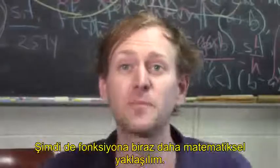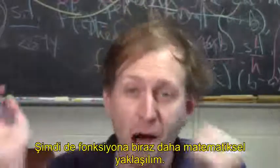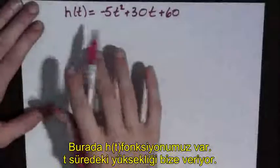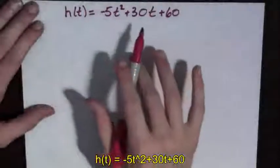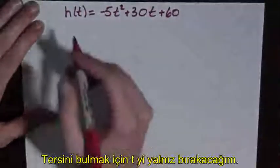Now let's just get a little bit more rigorous and do it algebraically. So here we have our function. h(t) gives height in terms of time. It equals minus 5t squared plus 30t plus 60. To find the inverse,